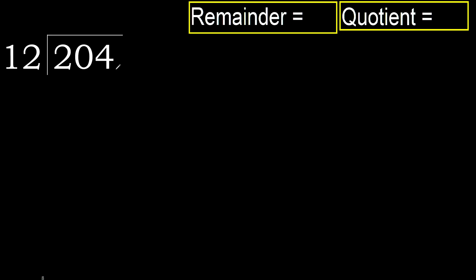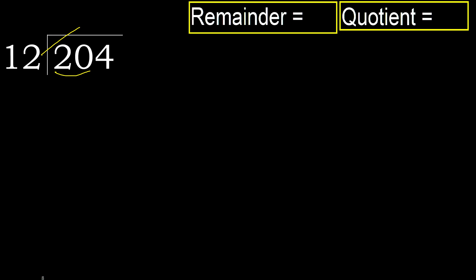240 divided by 12. 2 is less, therefore next. 20 is not less, therefore with 20, find which number 12 multiplied by is nearest to 20 but not greater.